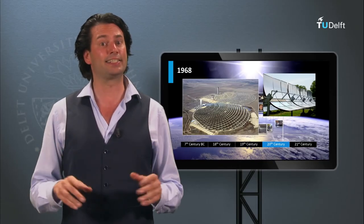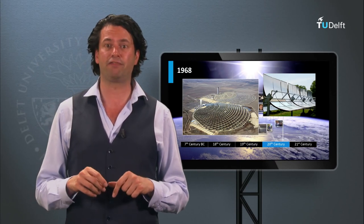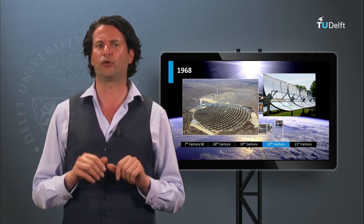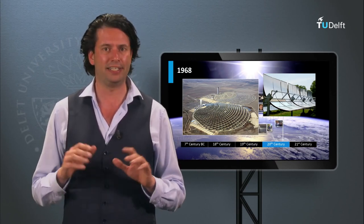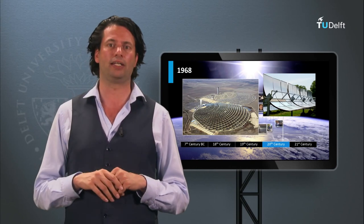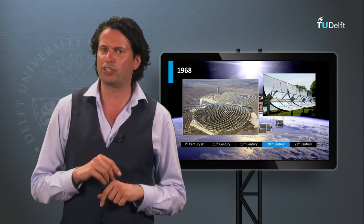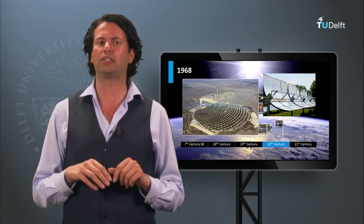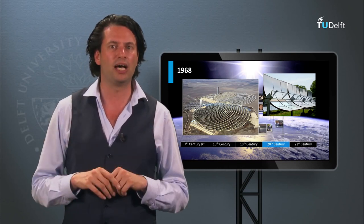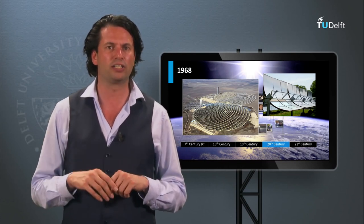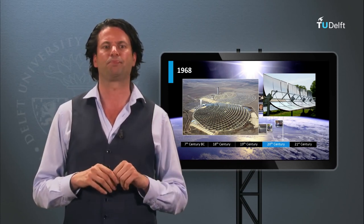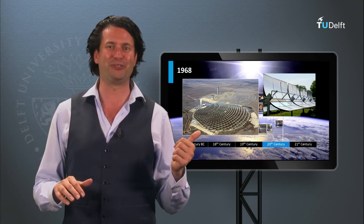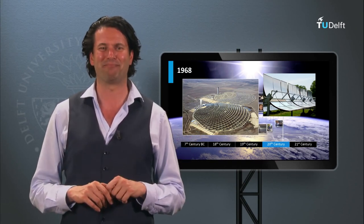In 1968 Professor Giovanni Francia built the first concentrated solar power plant near Genoa in Italy. The plant was able to produce 1 MW with superheated steam at 100 bars and 500 degrees Celsius. Note that the pictures shown do not reflect the actual plant in Italy.